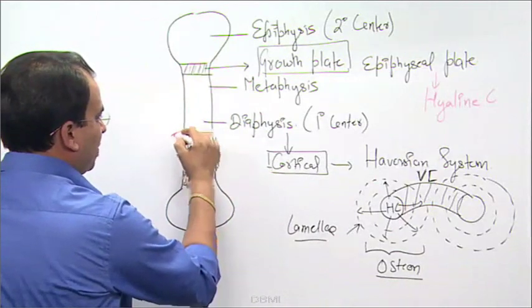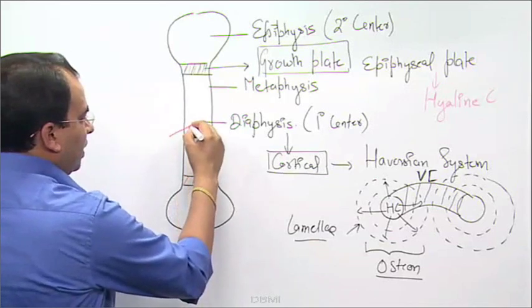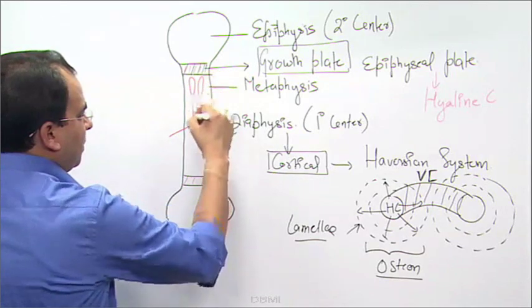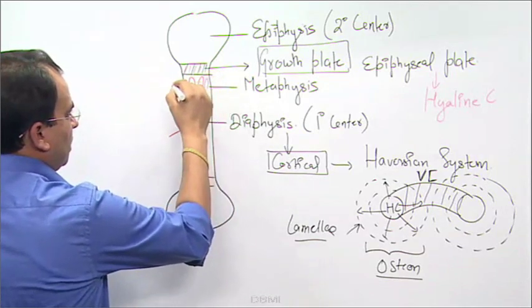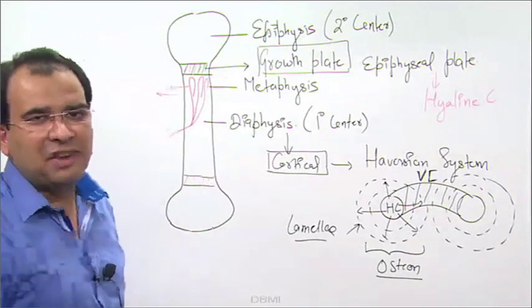When blood vessels enter from here, from the nutrient foramen as a nutrient artery, we have these ascending branches which loop in this manner. These arteries are supplying the metaphysis.